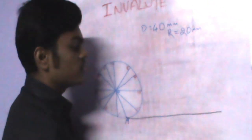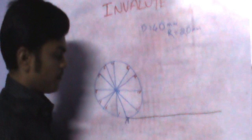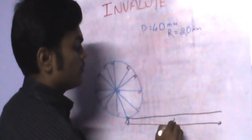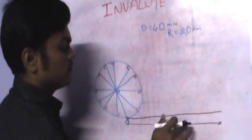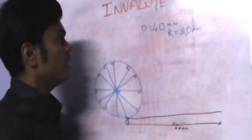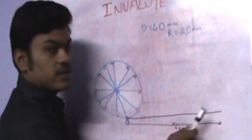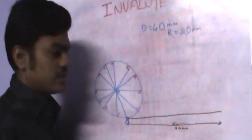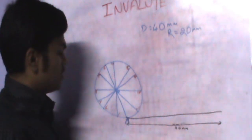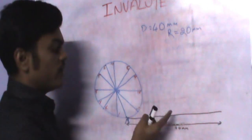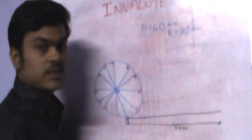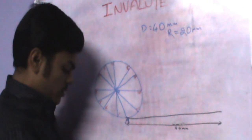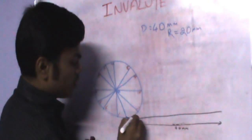This tangent distance should be equal to the diameter of the circle, which is 40 mm. So I have drawn a tangent of length 40 mm. Now divide this tangent into 12 equal parts — the same number of parts as the circle division. If I had divided the circle into 8 or 9 parts, the same number should be used here.